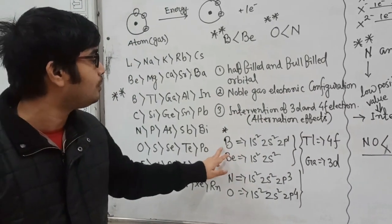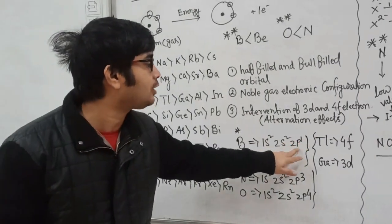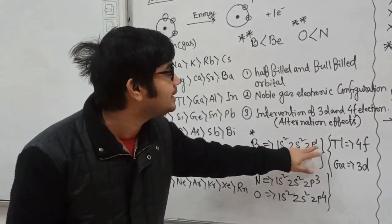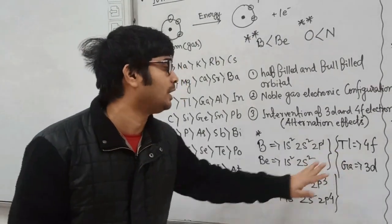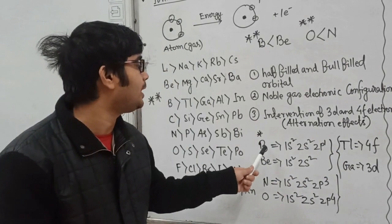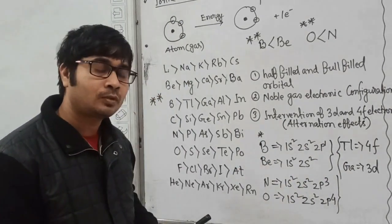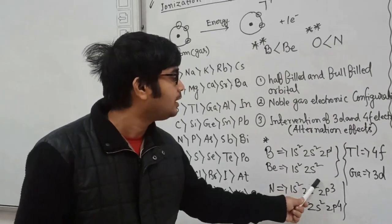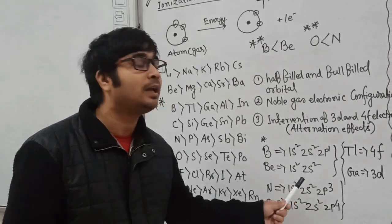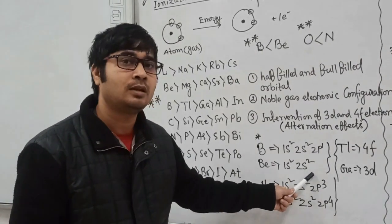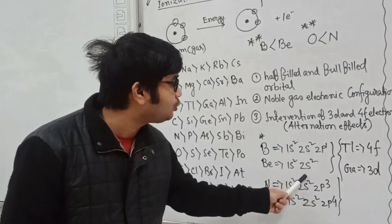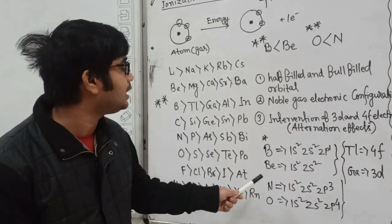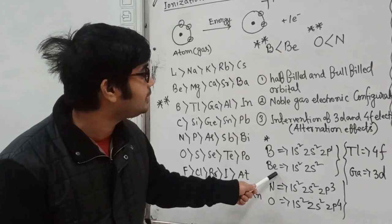Boron has 1s², 2s², 2p¹ and beryllium has 1s², 2s². If we want to remove an electron from boron, we have to remove this 2p¹ electron, which is neither half-filled nor fully-filled. So it is easier to remove an electron from the 2p orbital, and we need less energy for boron. But beryllium has a very stable electronic configuration — its 2s² is very close to the helium noble gas configuration, and it is very difficult to remove those 2s² electrons. That's why beryllium has higher ionization energy than boron.